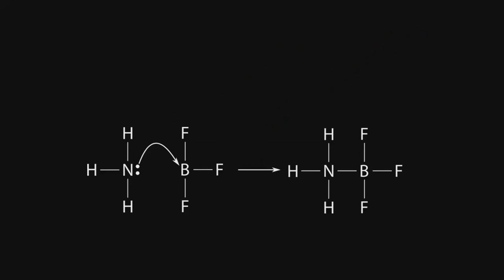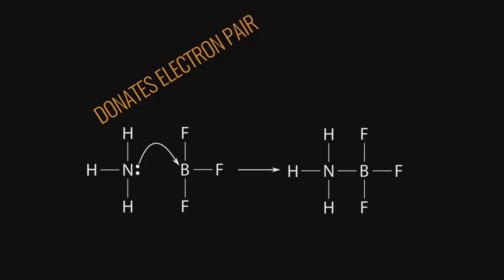Here's another reaction — a classic reaction between ammonia and boron trifluoride. This is a good example where boron trifluoride is not a Bronsted-Lowry acid, but under the Lewis definition it is clearly an acid. Ammonia donates its electron pair to boron trifluoride, making ammonia the Lewis base, and boron trifluoride accepts the electron pair, making it the Lewis acid. Boron trifluoride is sp2 hybridized with an empty 2p orbital, which it fills by accepting that electron pair from ammonia.